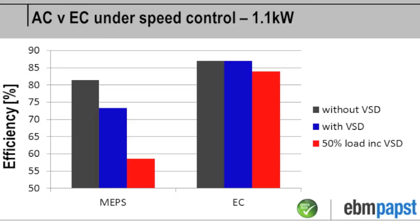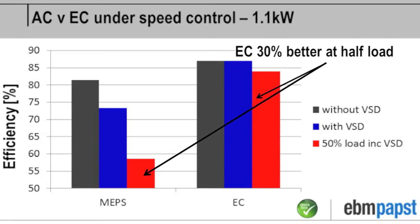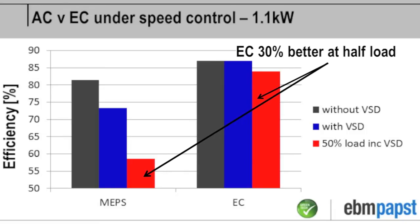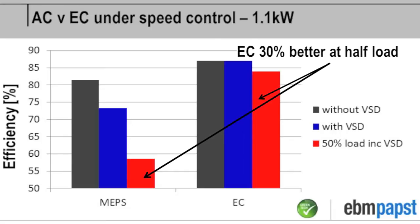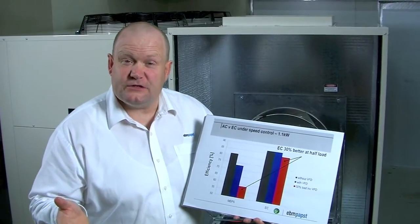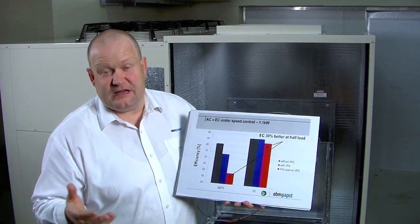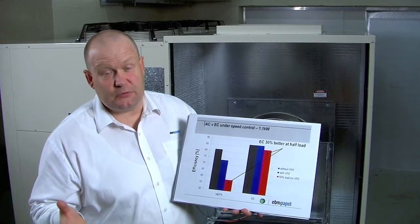So here I've charted the efficiency of the two systems at 50 percent speed and you can see the dramatic drop off in the efficiency of the AC VSD couple in comparison to the EC product. The EC product stays at high efficiency across the whole of its speed range and this is really important. This means if you're looking to use speed control as a strategy for reducing your power consumption then EC and permanent magnet motor products are the products to choose.